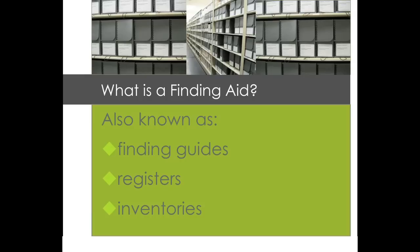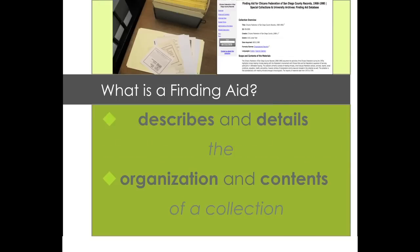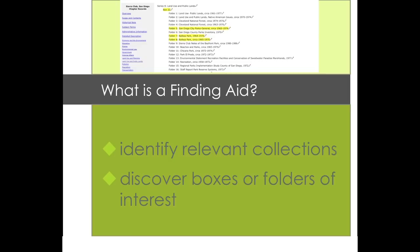Finding aids, also known as finding guides, registers, or inventories, are tools created by archivists to help you navigate archival and manuscript collections. A finding aid describes and details the organization and contents of a collection. Reading finding aids, whether online or on paper, can help you efficiently identify relevant collections to your research, and to discover boxes or folders of interest within those collections.